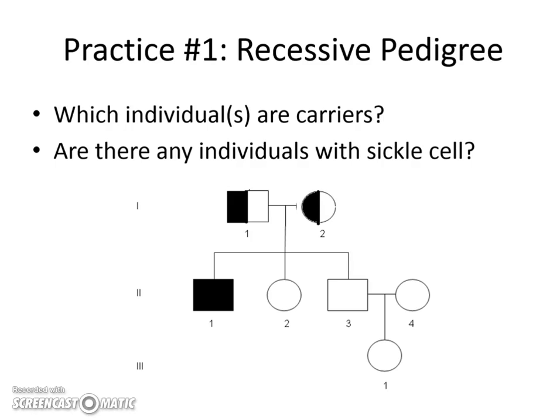Let's see if you can practice some of the things we've talked about — knowing what generation individuals are affected, what carriers look like, what recessive traits look like, and so forth. I have two questions for you to analyze. You can do this in your laboratory notebooks, on some paper, or just in your head. First question: look at this recessive pedigree — which individuals are carriers? Are there any individuals with the actual sickle cell trait? Pause the video now to complete this activity.